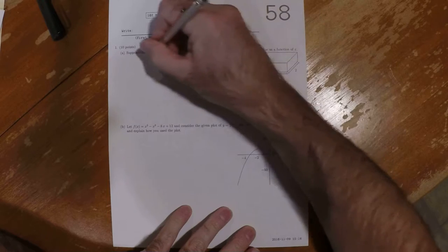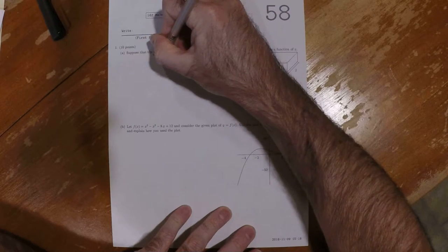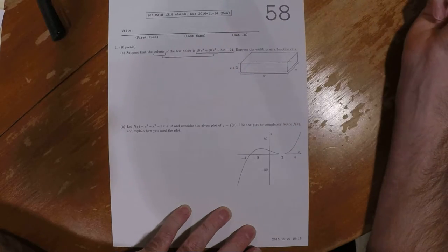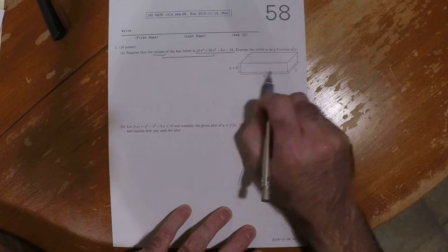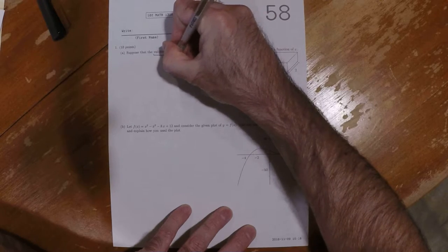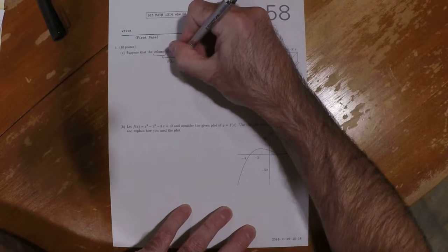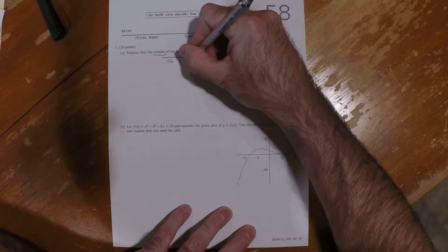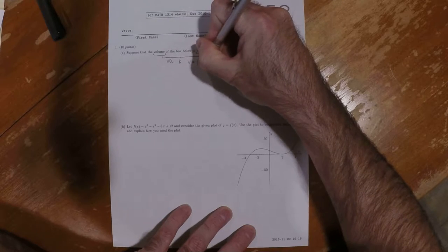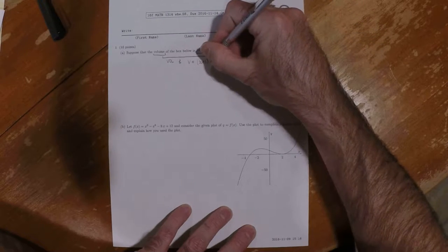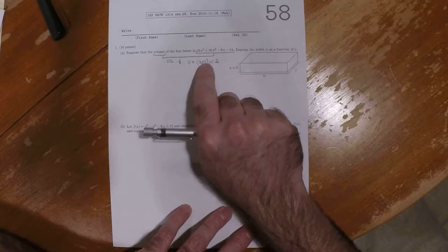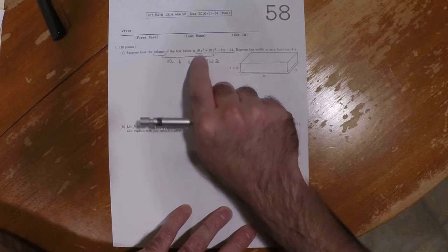On the one hand, we know that the volume of the box is this expression. And on the other hand, we know that the volume must be the product of these lengths. So that's volume. And we know that the volume v should be x plus 3 multiplied by w multiplied by 2. So that means that this product x plus 3 times w times 2 is equal to that.